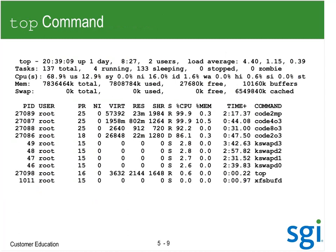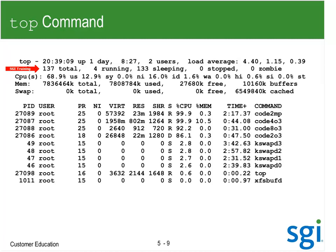Here's top. On the top line: how long it's been up, how many users have logged in, and my load level — one minute, five minute, 15 minute. I've got 137 processes on this system. Four are running in an R state. 133 are sleeping. The sleeping counts S's and D's. A D is a non-interruptible sleep.